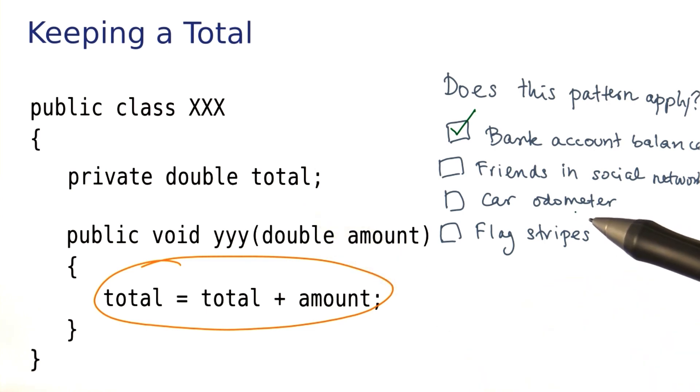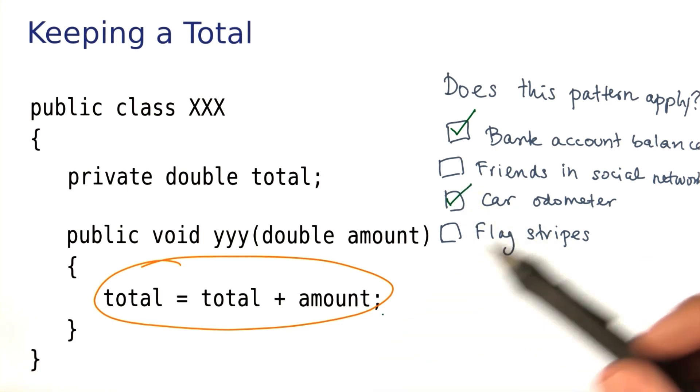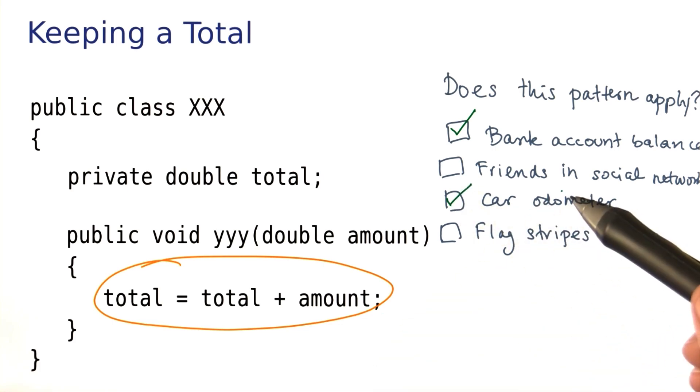A car odometer, that again makes sense. As miles accumulate, this total just gets bigger. Notice that this one here doesn't get smaller. That's fine.